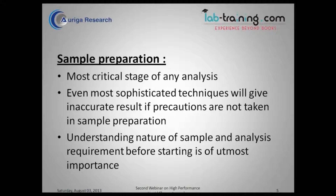The information you should gather includes source and origin of the sample, toxicity or poisonous character, special handling requirements if any, stability of sample to light and heat. Sometimes you do not get all this information, so a good reference is material safety data sheets on known samples, which can be referred to if such data is not available from the source of the sample.